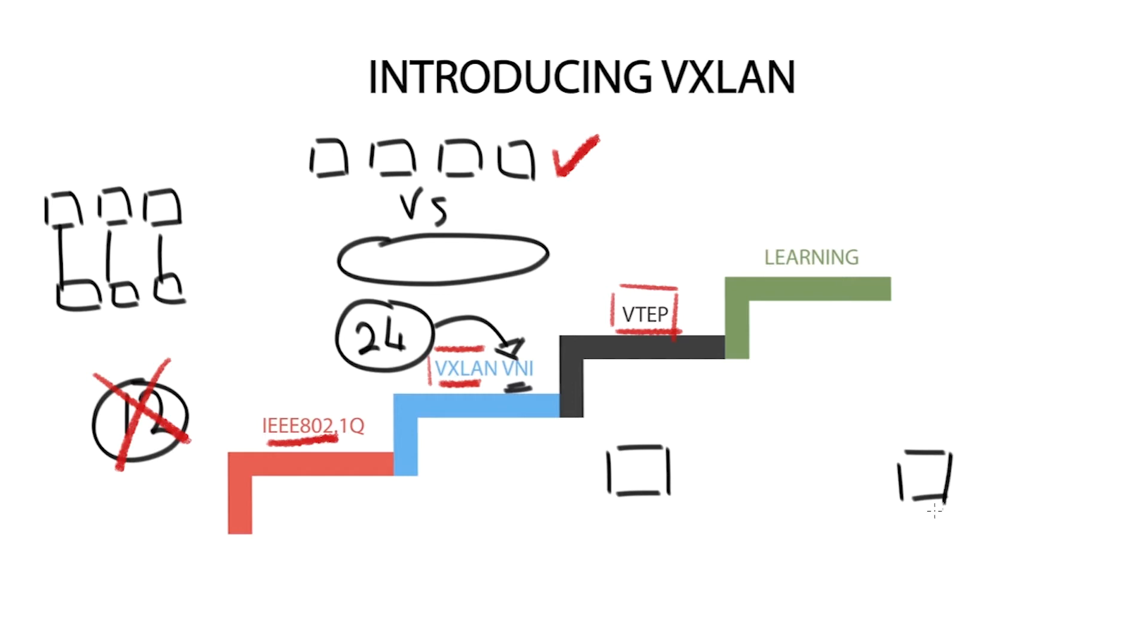The VXLAN tunnel endpoints service maps .1q layer 2 frames, aka VLAN ID, into a VXLAN segment tunnel, aka VNI. The VTAP will have two interfaces. One interface will connect to the standard Ethernet to the end host in the local segment and the other connects to the regular IP underlay.